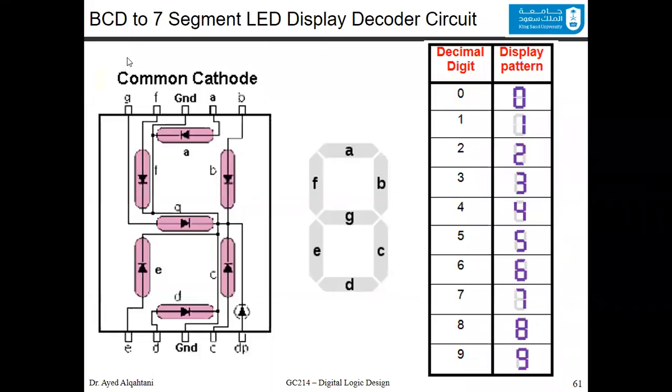This is an example that includes many of the techniques for function minimization that we studied so far using Karnaugh maps. It's a BCD, which we studied in a previous video, to seven-segment LED display decoder circuit. The input will be the decimal digit from 0 to 9, and the output will be a display pattern in a seven-segment LED display.